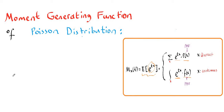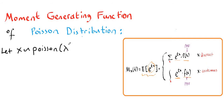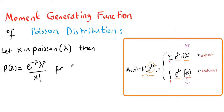In this video we're going to derive the moment generating function for Poisson distribution. Let X be a Poisson distribution with parameter lambda. The mass function of X will be equal to e to the negative lambda times lambda to the X over X factorial, for X equal to 0, 1, 2 up to infinity. Poisson distribution is a discrete distribution supported from 0 to infinity.